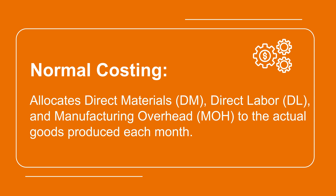So, what is normal costing? Normal costing allocates direct materials, direct labor, and manufacturing overhead to the actual goods produced each month. Direct material and direct labor are actual costs, but the manufacturing overhead is a predetermined annual overhead rate times actual goods produced.